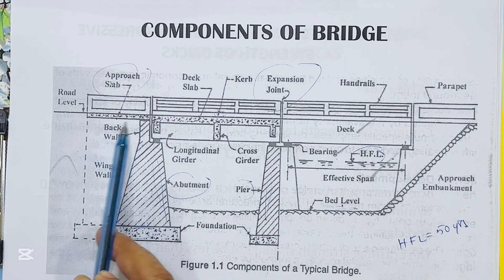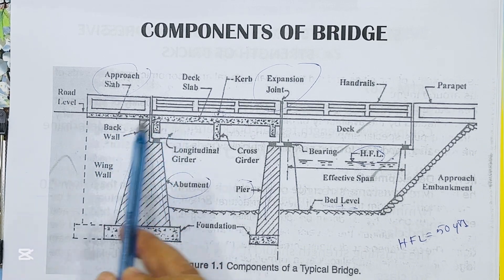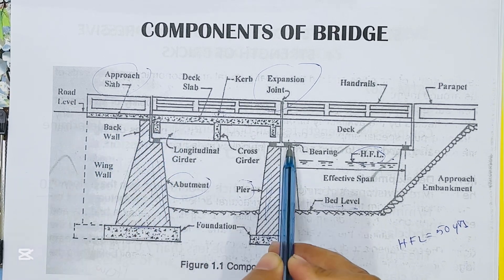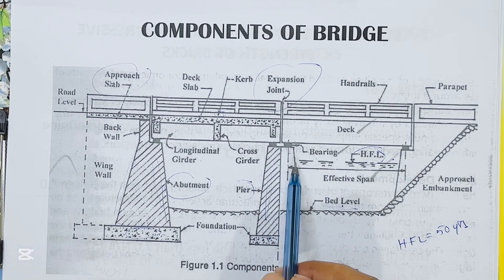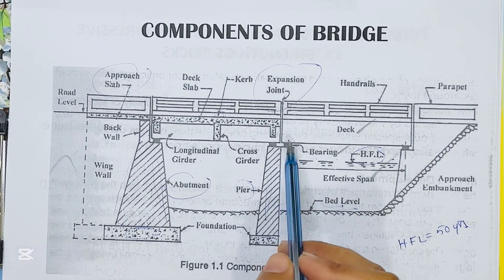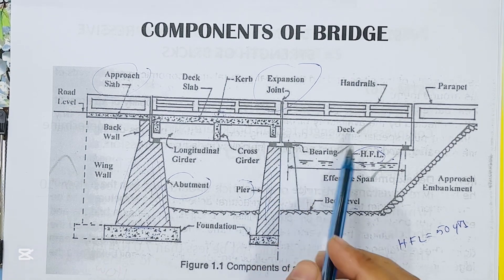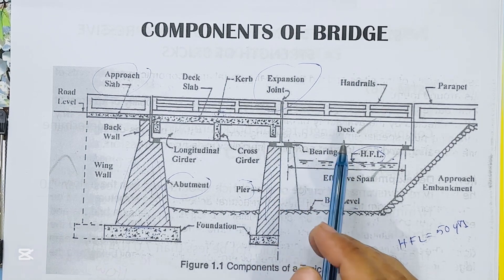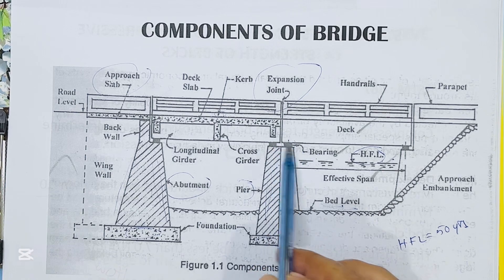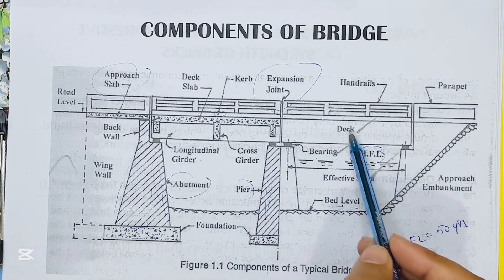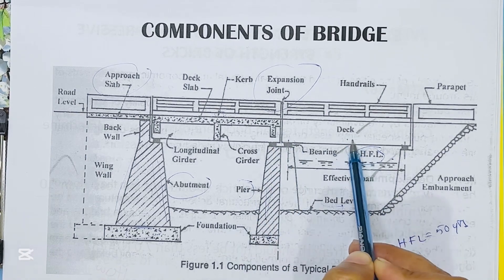The dark color you can see — this is bearings. Loads received by the deck are properly and safely transmitted to the substructure with the help of bearings. Now deck — the deck is considered as the road or rail surface of the bridge.